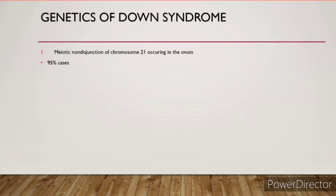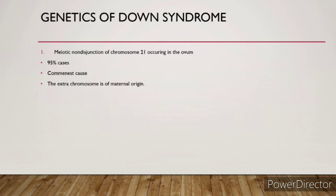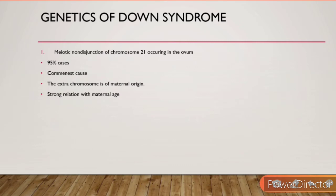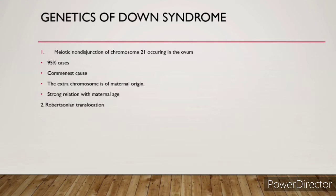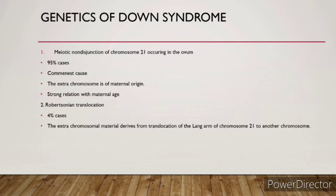In 95% of cases, meiotic non-disjunction is the cause of Down syndrome and it is the commonest cause. The extra chromosome is of maternal origin — this is an important MCQ point. The extra chromosome comes from the mother, with a strong relation to maternal age. The second cause is Robertsonian translocation.